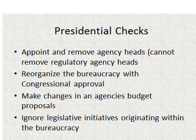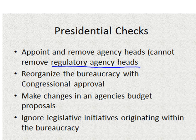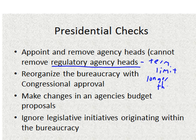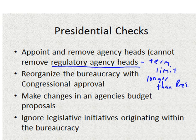The president has several checks on the bureaucracy within our checks and balances system. First, he can appoint and remove agency heads — that appointment power comes straight from the Constitution. However, regulatory agency heads cannot be removed because they are appointed for a term longer than the president's own term. For example, the Federal Reserve has a 14-year term, so a Fed chair appointed by Obama could be there through up to four different presidencies. But for executive agencies like the EPA or the FBI, he can hire and fire those people at his discretion.